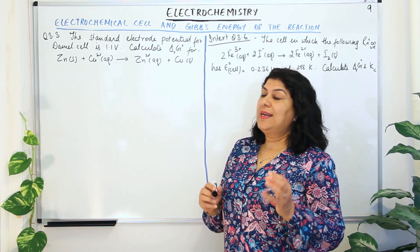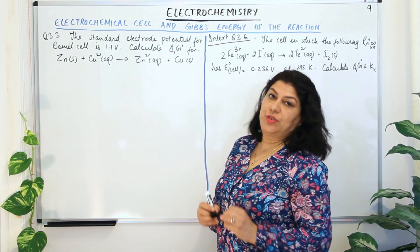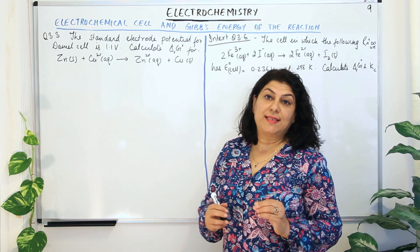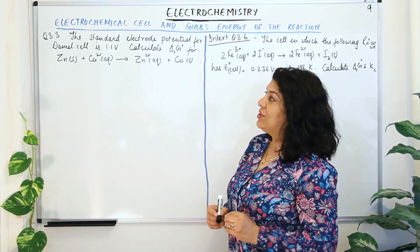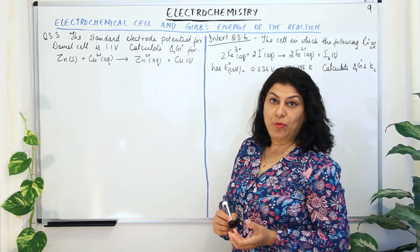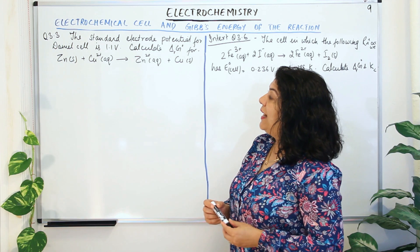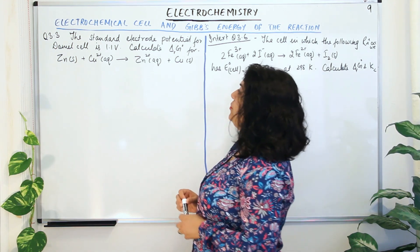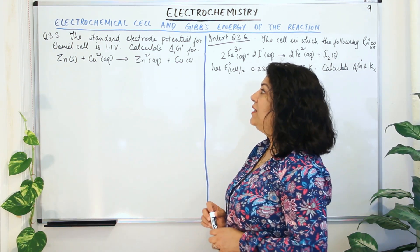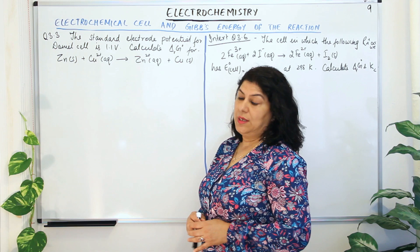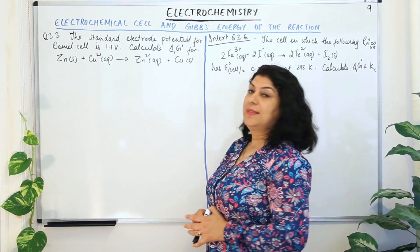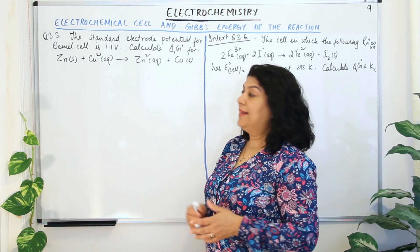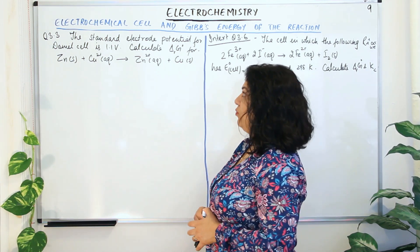Not wasting any time, let us come to the first question. This is solved example 3.3 from your textbook. The question reads that the standard electrode potential for Daniel's cell is 1.1 volt, which means that E° cell for Daniel's cell is 1.1 volt.